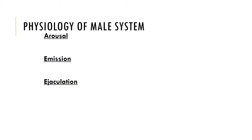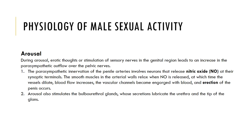Let's examine the physiology of the male system by looking at the arousal, emission, and ejaculation phases. Arousal involves enlargement and stiffening of the penis resulting from engorgement of the erectile bodies with blood. The arterioles supplying blood are usually constricted, resulting in a flaccid penis. Stimulation triggers a parasympathetic reflex that promotes the release of nitric oxide, which relaxes smooth muscles, allowing blood vessels to dilate. Expansion of the corpus cavernosum compresses drainage veins, preventing blood from draining away, and an erection is achieved.